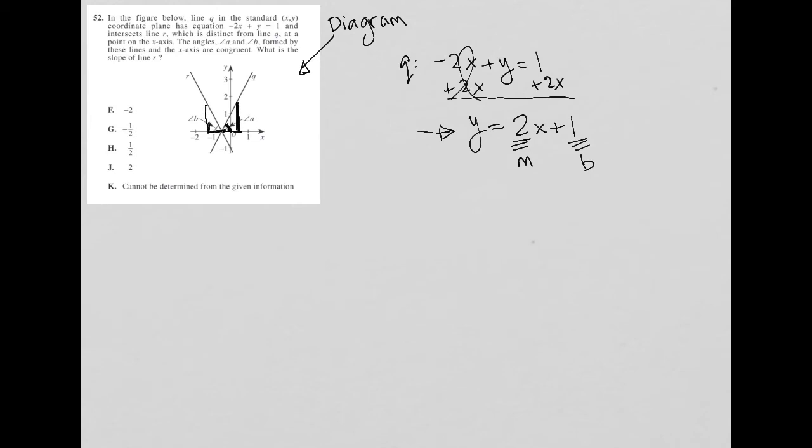So that means if angle A is congruent to angle B, that means for line R, which creates angle B with the X-axis, its slope must be the exact same, just the opposite sign, but the exact same as the slope for line Q. Because this angle formed with the X-axis can only be formed under certain circumstances where you have a certain slope of the line. So because the angles are equal to each other, that means the slopes are also equal to each other, just opposite sign. So the slope of line Q is 2, and the slope of line R therefore must be negative 2, and therefore my answer is choice F.